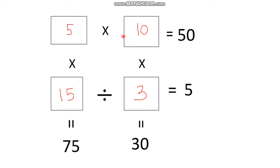Let us verify: the values are X=5, Y=10, A=15, B=3. Check: 5 times 10 equals 50 ✓, 10 divided by 3 ... 5 times 15 equals 75 ✓, 10 times 3 equals 30 ✓. This is the answer.